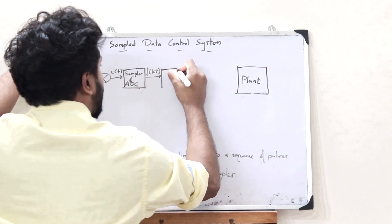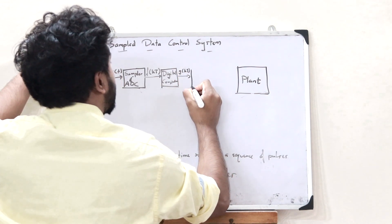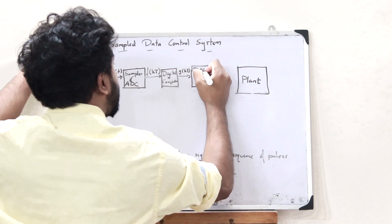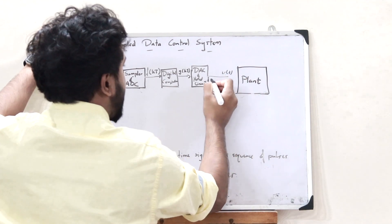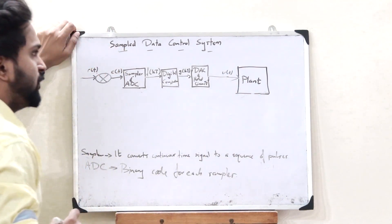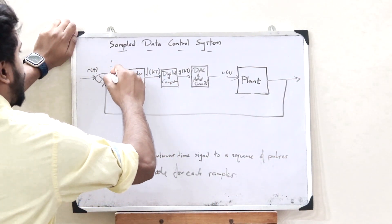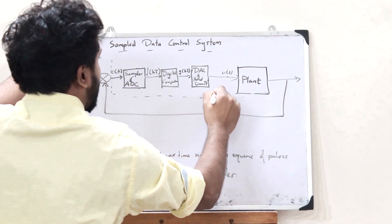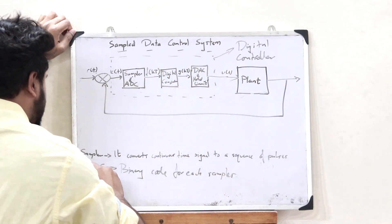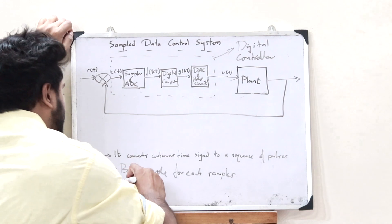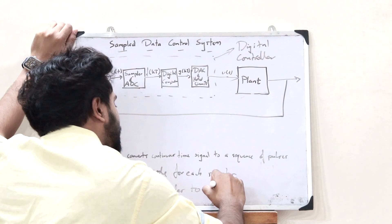This digital signal can be passed through a digital computer. It is then passed through a digital to analog converter — a DAC — and a hold circuit, giving us an analog signal which is then passed through the plant. What the DAC and hold circuit does is that it converts the output binary codes into continuous time signals.